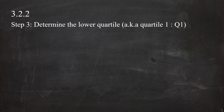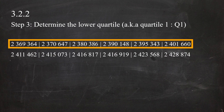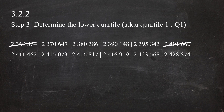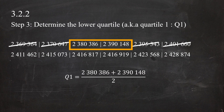Next, determine the lower quartile, Quartile 1, by finding the median of the lower half of the data set. Systematically eliminating values from both ends of the lower half leaves two values. Quartile 1 is therefore 2,380,386 plus 2,390,148 divided by 2, giving a lower quartile of 2,385,267.